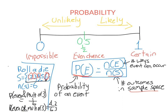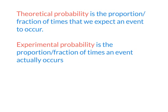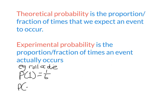Let's quickly go through the difference between experimental and theoretical probability. The theoretical probability is the proportional fraction of times that I expect an event to occur, whereas the experimental probability is the proportional fraction of times that an event actually occurs. Please pause and copy this down if you need. In the previous example, I calculated that the probability of rolling a 1 is 1 over 6, and the probability of rolling a number that's even or a multiple of 3 is 2 thirds — those were both theoretical probabilities.